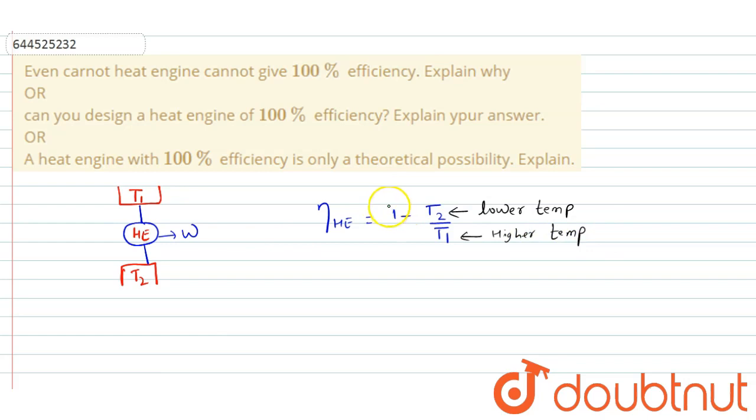If we want to obtain 100% efficiency from this heat engine, then the term T2 by T1 should be equal to 0. So for 100% efficiency, T2 by T1 must be equal to 0 or tends to 0.